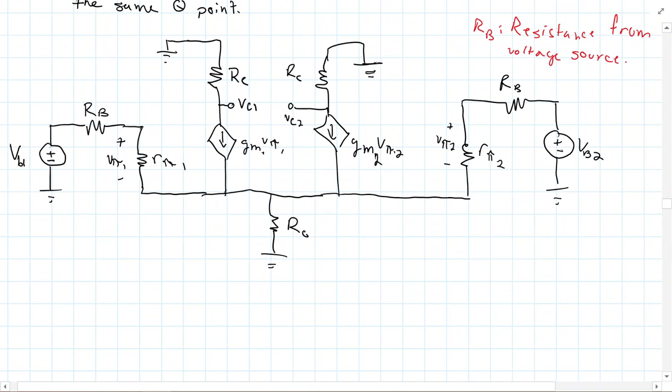Now, because they're biased at the same Q point here, we know that RPi1 equals RPi2, which is just some RPi, because they're biased at the same Q point. GM1 then would equal GM2, which would just be GM, again, because they're biased at the same Q point.